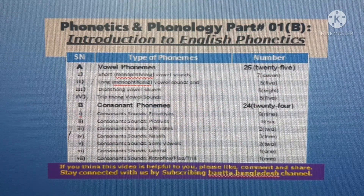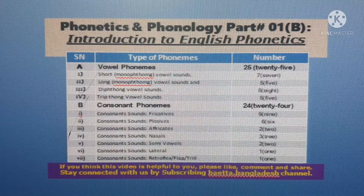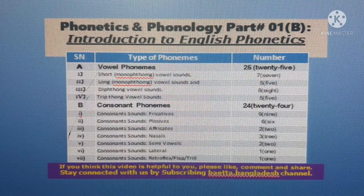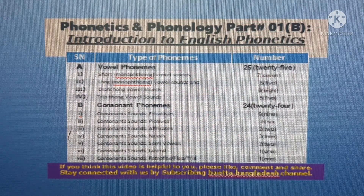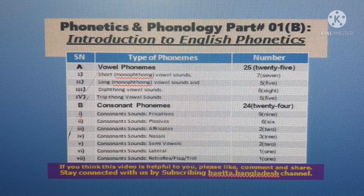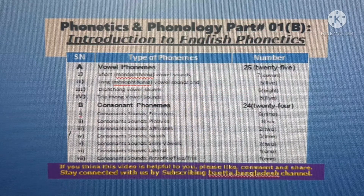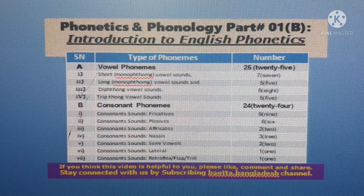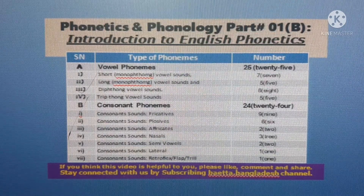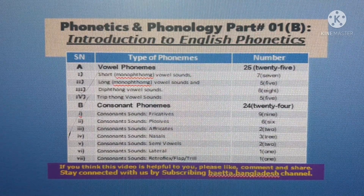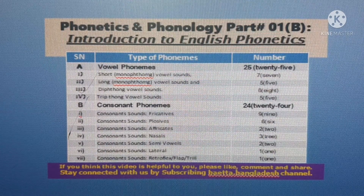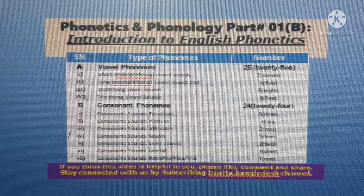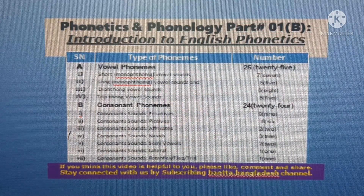Types of consonant phonemes: though there are 21 consonants in the English alphabet, there are 24 consonant phonemes in the English phonetic alphabet. In articulatory phonetics, a consonant is a speech sound that is articulated with complete or partial closure of the vocal tract. Some phonemes are produced with the lips, some with the front of the tongue, some with the back of the tongue, some in the throat. Some others are produced by forcing air through a narrow channel, called fricatives, and some have air flowing through the nose, as nasals.